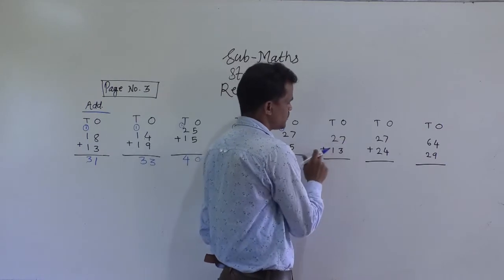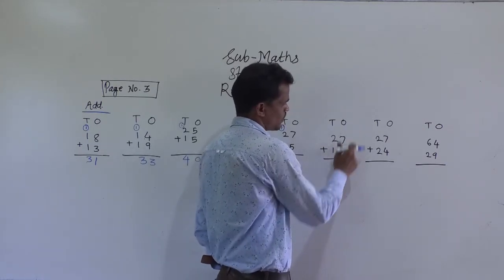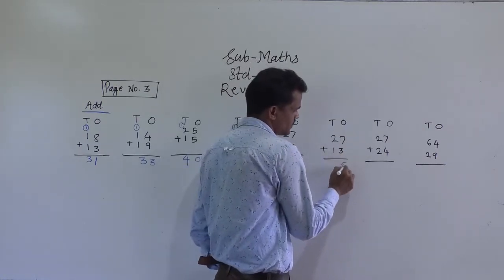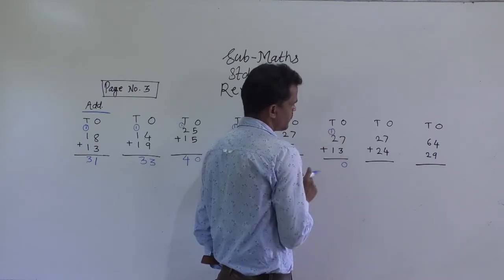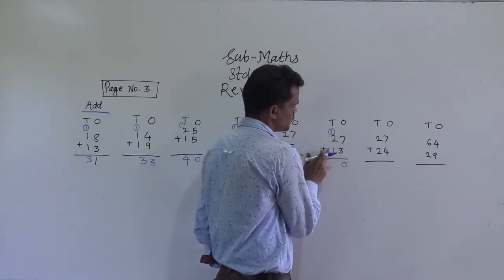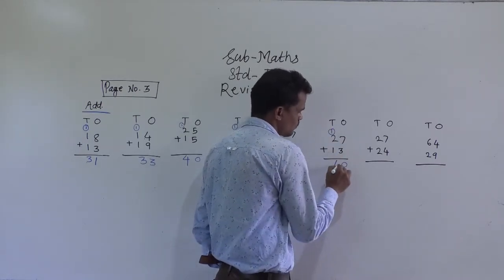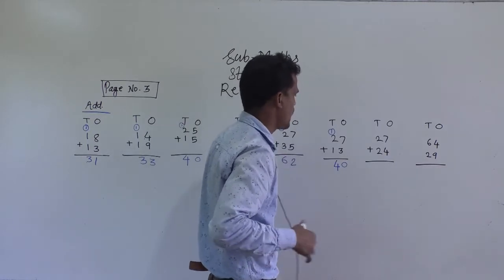Next example: 27 plus 13. Start from the ones place. 7 plus 3 is 10, so write 0 here and carry 1. 2 plus 1 is 3, plus 1 carry is 4. So 40 is the answer.